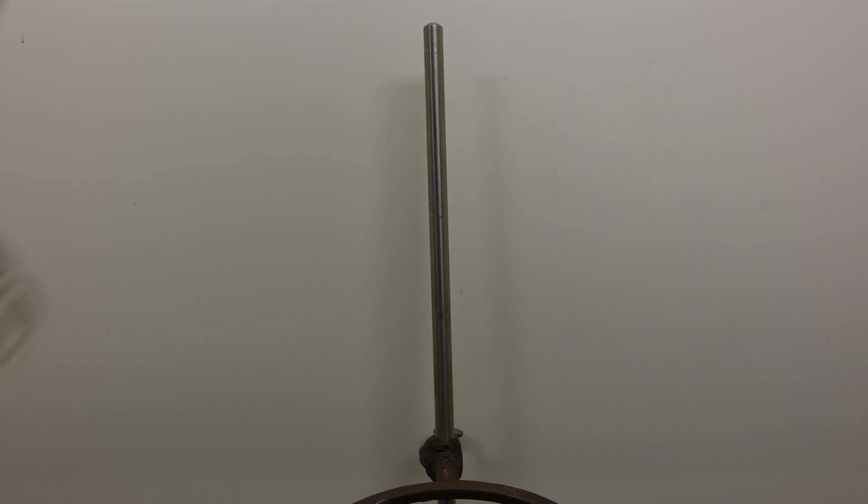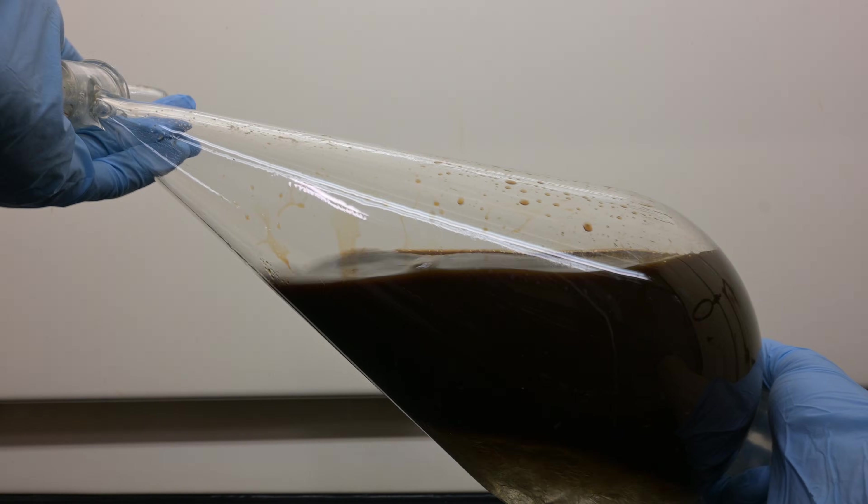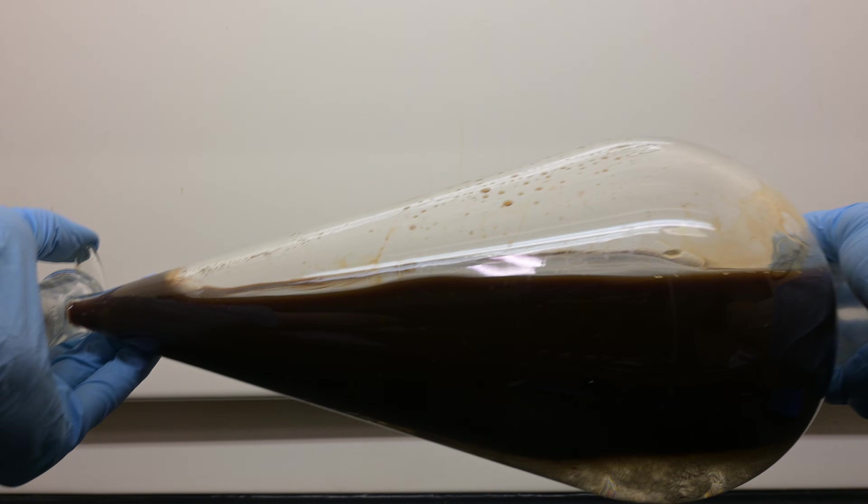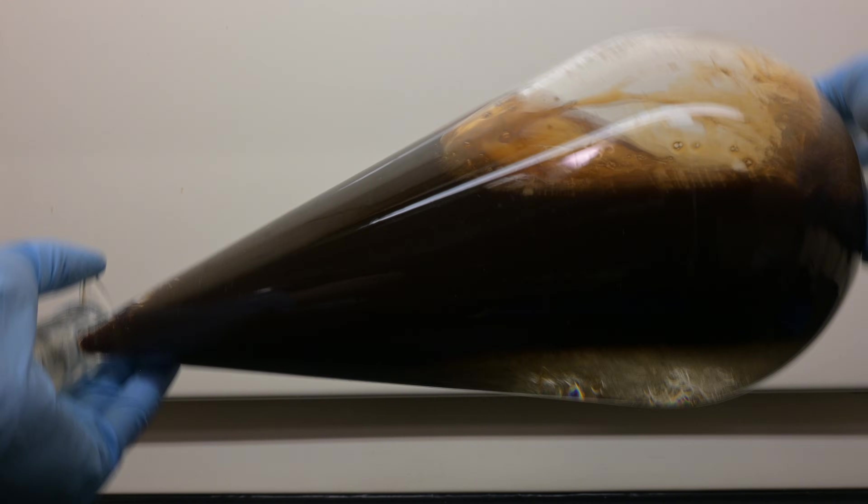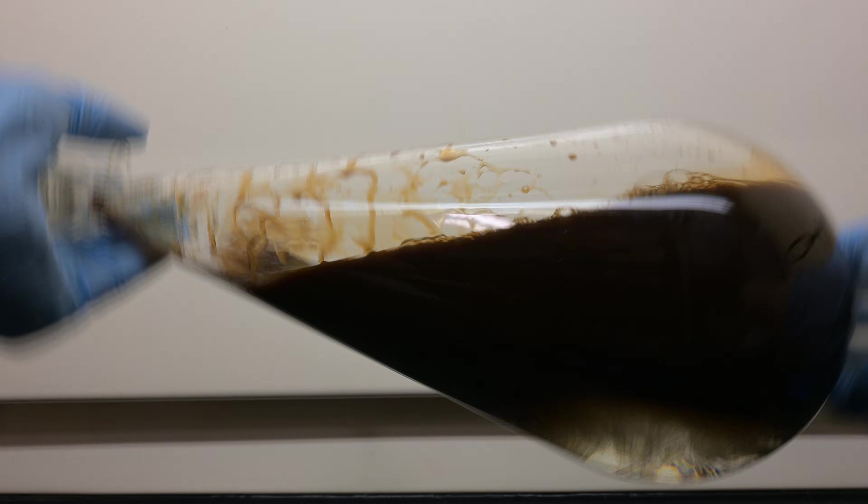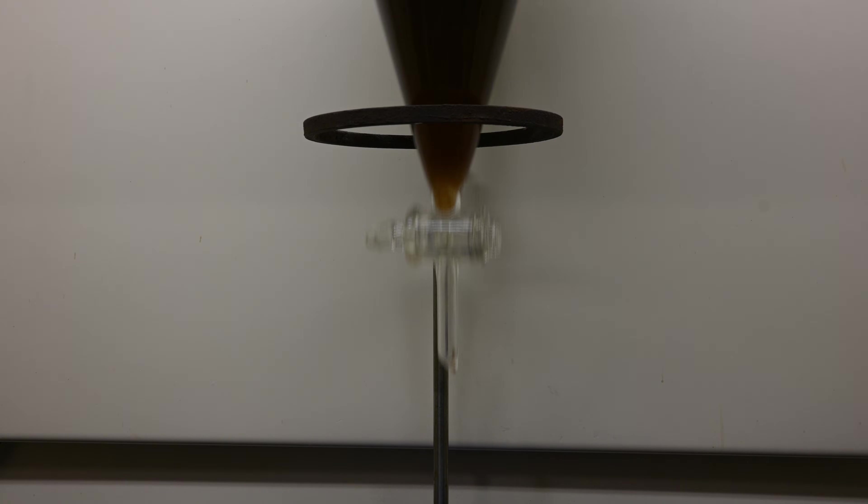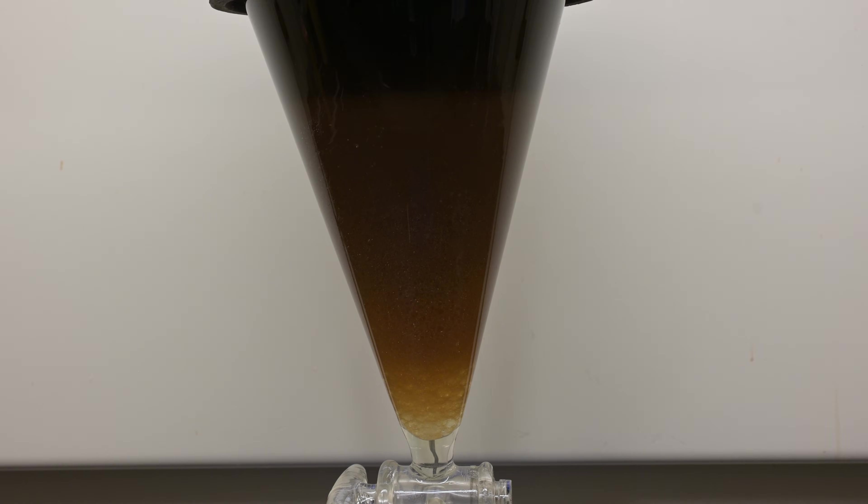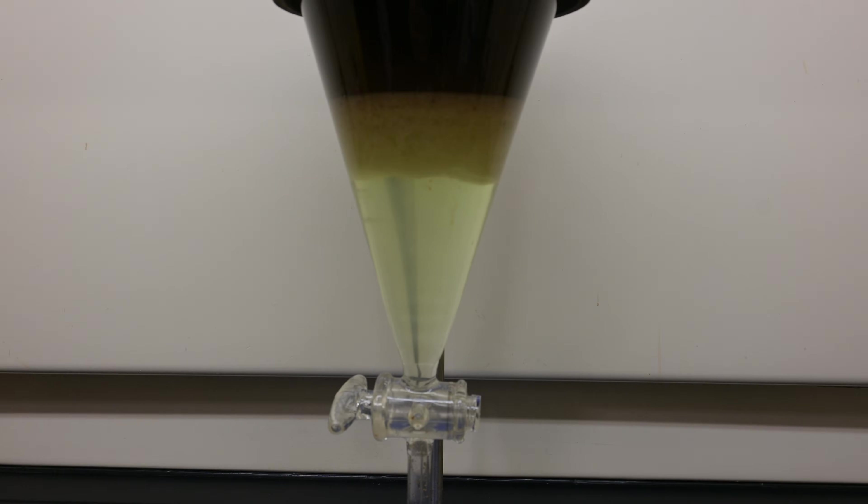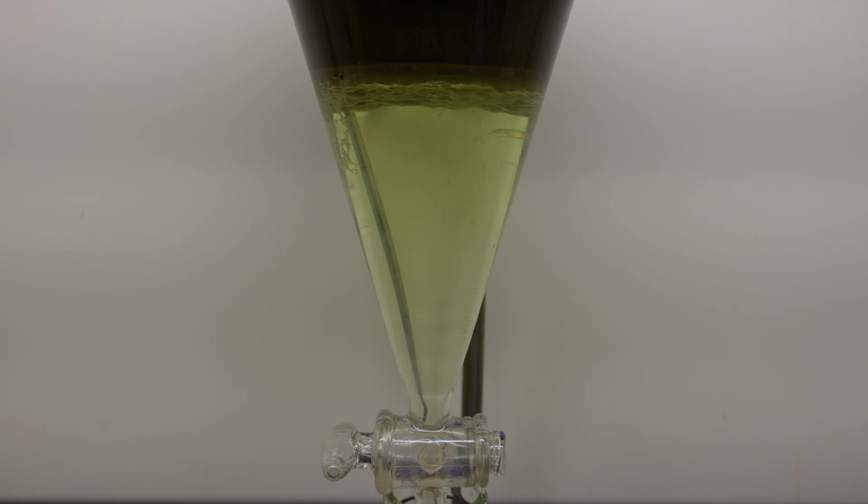The next step is to mix the dichloromethane with the tea extract gently. We want a lot of contact for the caffeine to move into the organic solvent, but an emulsion will form if we shake it too violently, which is terrible due to the emulsion trapping impurities. After mixing, I place the separatory funnel back into the ring and allow the organic layer to separate from the aqueous layer. Quickly, I notice three layers, which is annoying. The middle layer is the undesired emulsion. Fortunately, it's small enough not to affect the extraction much.